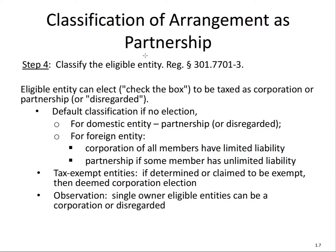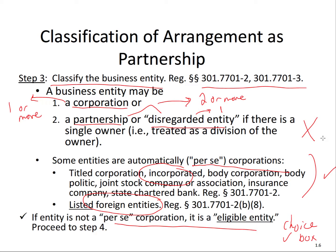Finally, in step four, we classify the eligible entity under reg 301.7701-3 — the check-the-box regulation. If you're not a per se corporation, you can be classified as a corporation, partnership, or disregarded entity. You can't be considered a partnership for tax purposes if you only have one owner, and you can't be a disregarded entity if you have two or more owners, but a corporation can have one or more.